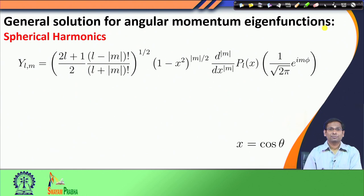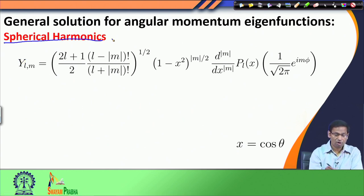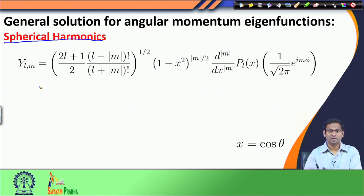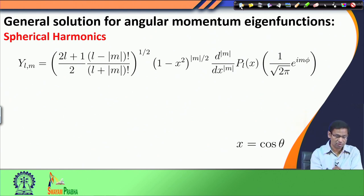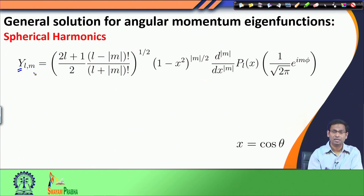The general solution for the angular momentum eigenfunctions is known as spherical harmonics. The form of the spherical harmonics functions is given here — they may appear very scary, but do not worry, we will break this down for you so that the form becomes very meaningful. We represent spherical harmonics as Y (y is often used) rather than psi — this is convention.